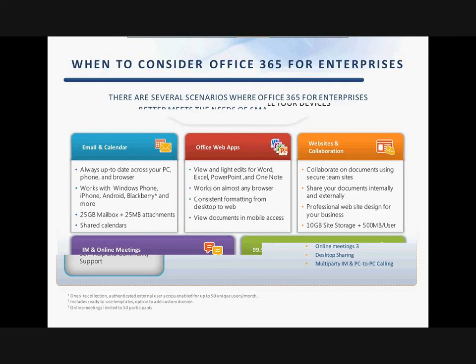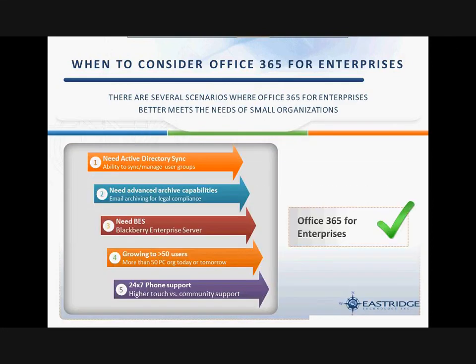For those that need enterprise features, a lot of times there are questions like, well, I have less than 25 users but there are some things I really want. The enterprise version of Office 365 allows active directory synchronization — managing your security groups present on your network in the cloud or on your on-premise network directly. Some customers also need the ability to archive emails and search those archives. Additional options include BlackBerry Enterprise Server or a higher level of support, all included as part of Office 365 for enterprises.